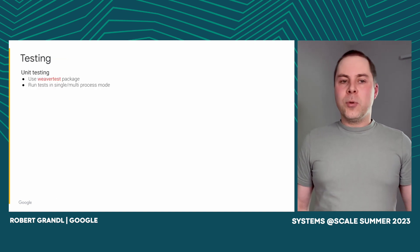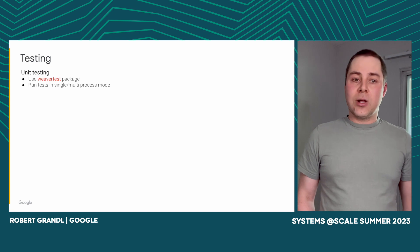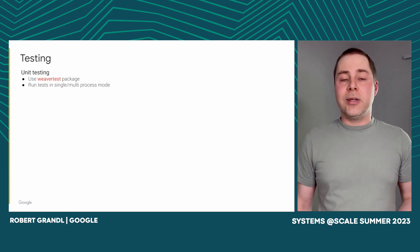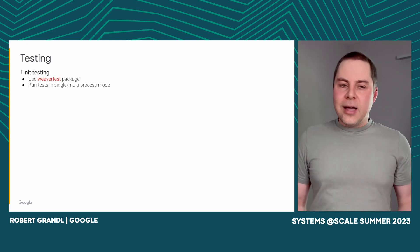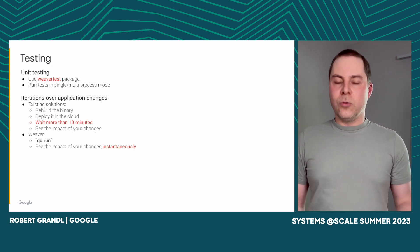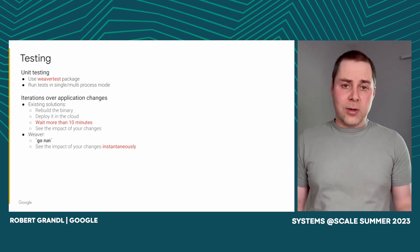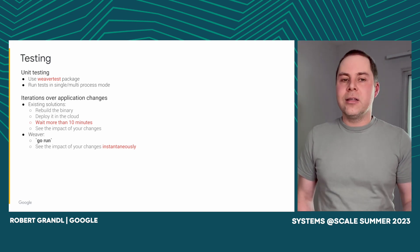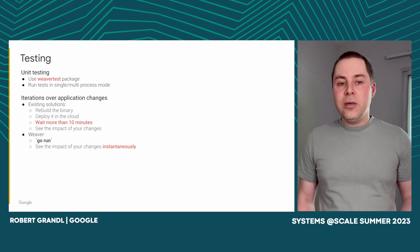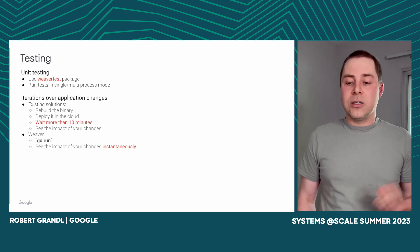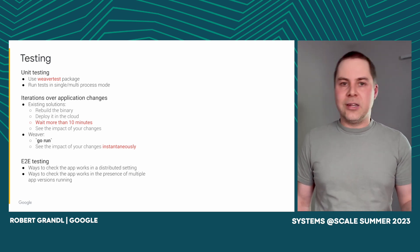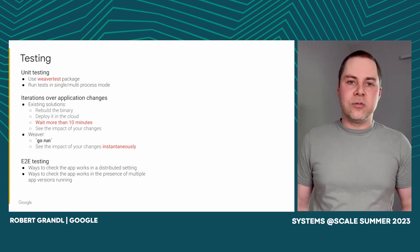For testing, we provide a Weaver test package which allows you to test your application by running tests in single and multi-process mode. The experience of writing tests in ServiceWeaver is as simple as writing the application itself. When you make a small change, you simply do go run and see the impact right away — whereas today, no matter what solution you use, you have to rebuild the binary, deploy it to the cloud, wait tens of minutes, and then see the change, which can be very frustrating and slow down development. We also have ways to do end-to-end testing, such as whether the app works in a distributed setting with multiple versions running.